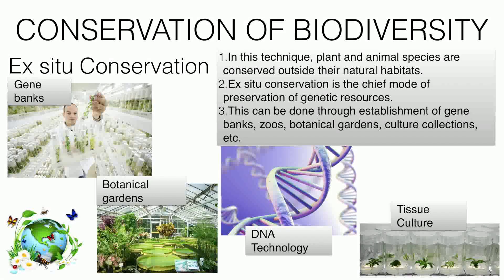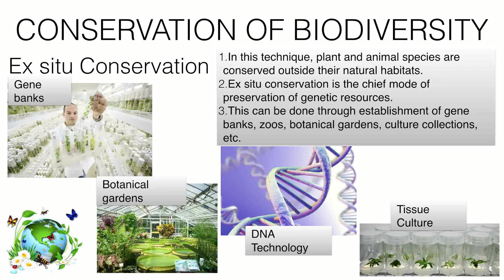Ex-situ conservation includes gene banks, where we can store the genes of each and every species; botanical gardens, where we conserve plants from different geographical areas; DNA technology, where we can manipulate the DNA of species; and tissue culture, where we grow a complete plant from one small tissue sample.